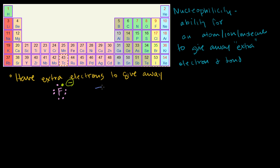Iodine is a halide — it has seven valence electrons and many more electrons than fluorine. It is also reasonably electronegative, not as electronegative as fluorine. Remember, the trend goes from the bottom left to the top right, so fluorine is extremely electronegative, but iodine is still pretty electronegative. So things with extra electrons, lone pairs, and especially a negative charge are going to be pretty good nucleophiles. Another example that's not a halide is the hydroxide anion.